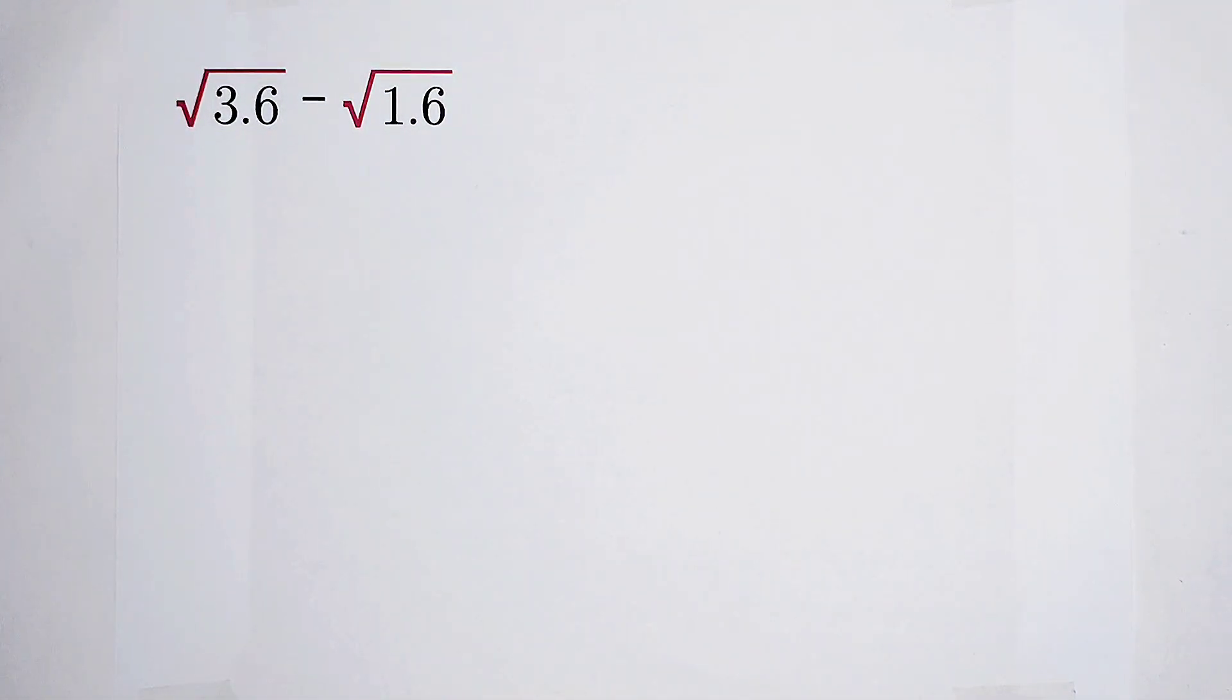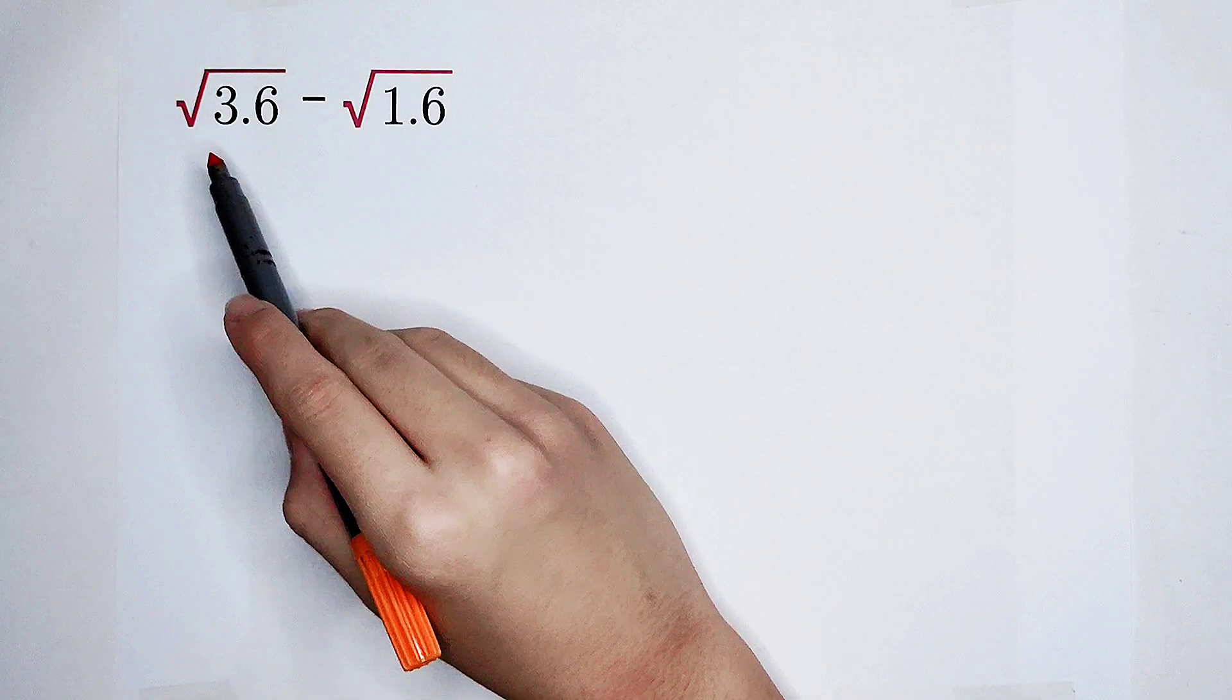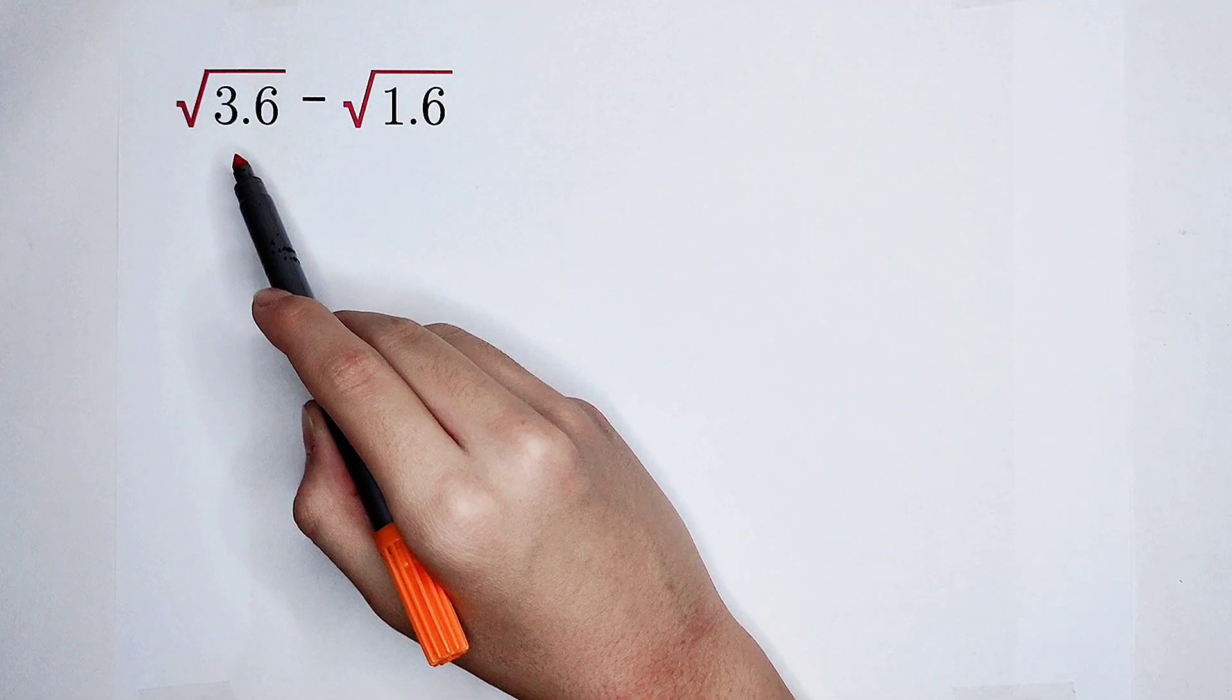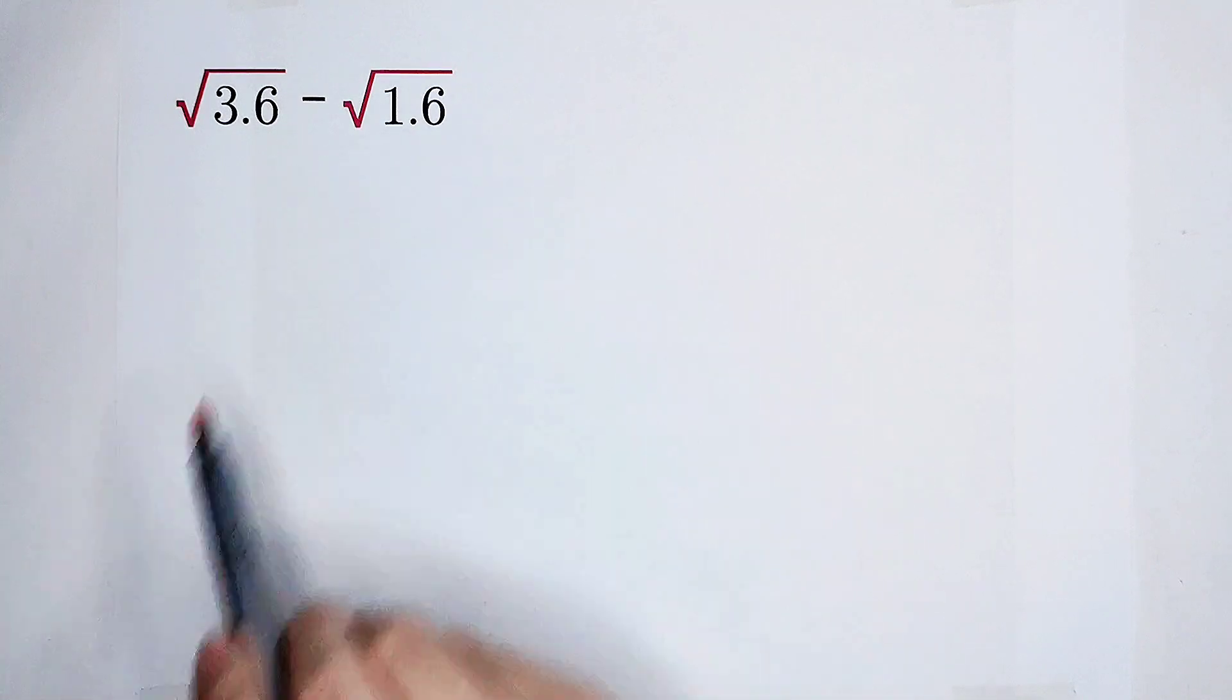For dealing with this question, we have to think about it. All of us know that the square root of 36 is an integer, is 6, and square root of 16 is equal to 4.